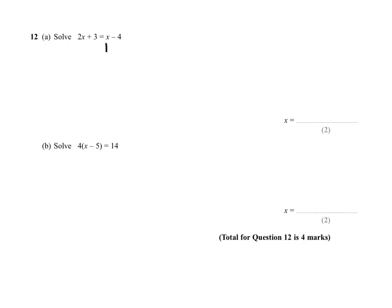If we bring this x across, it changes to a minus x. If we bring this 3 across, it changes to minus 3. So we have 2x minus x equal to minus 4 minus 3. This gives us a value of x equal to minus 7. And that is our final answer.